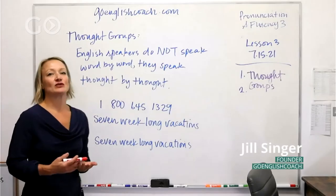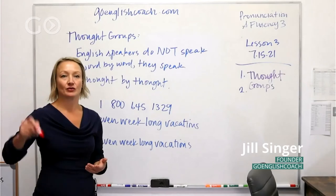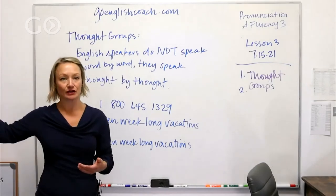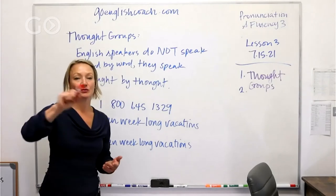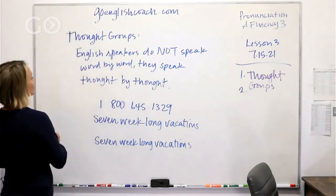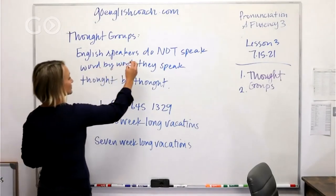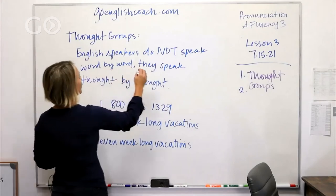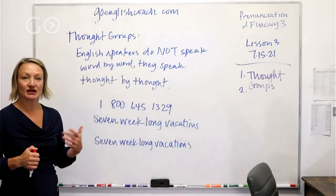The idea is that we do not want to speak every word very clearly, because then I sound like a robot or I sound angry — and we don't want to sound angry unless I'm angry. So let's go ahead. English speakers do not speak word by word; they speak thought by thought.